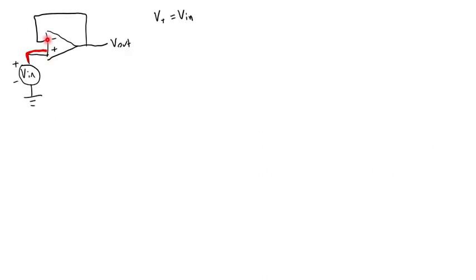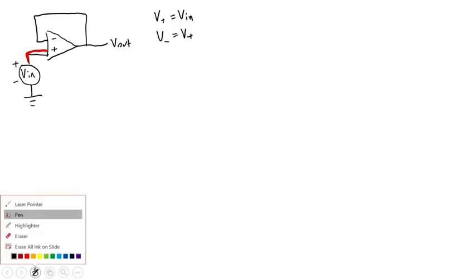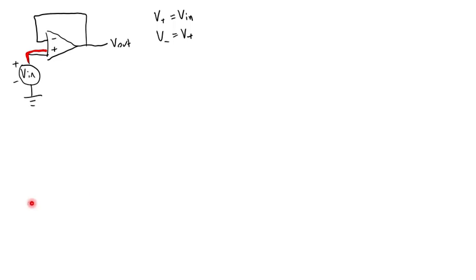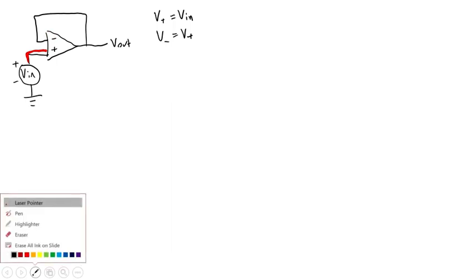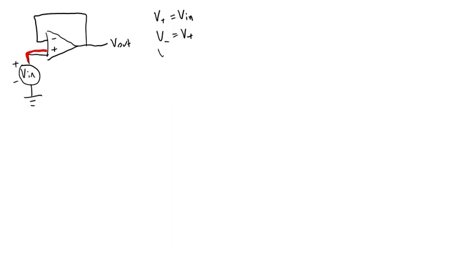We know the voltage here has to be equal to the voltage there. We also have V-minus equals V-plus, and then we have just a wire going directly over from V-minus to V-out. So V-out has to equal V-minus. What that tells us then is just that V-out equals V-in. It's just a bunch of things that are equal to each other.